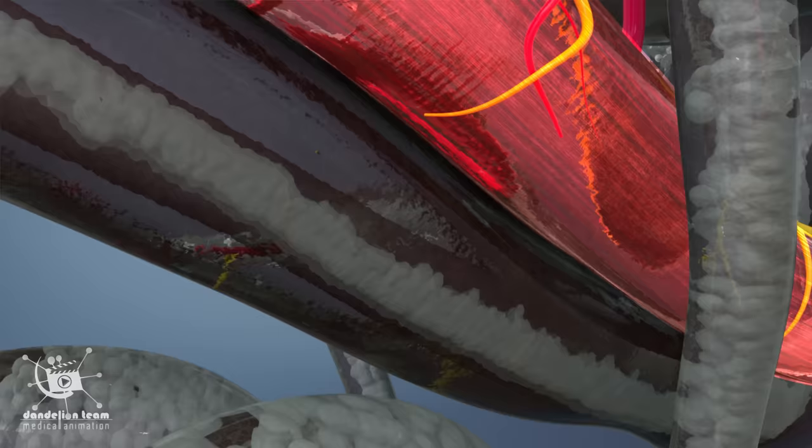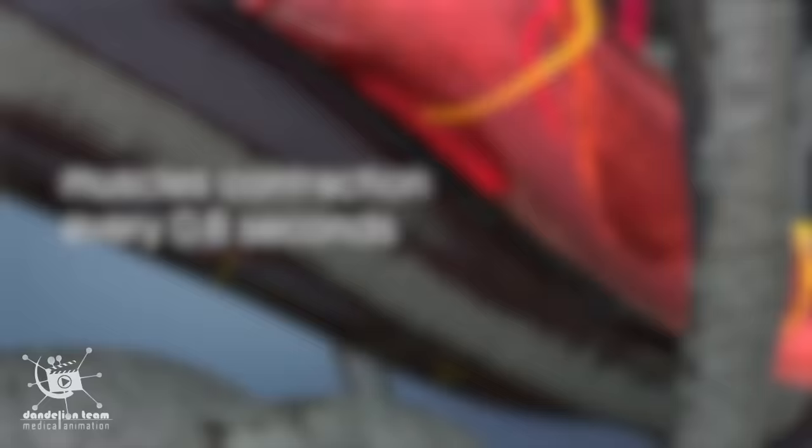Muscles at the base of the penis contract every 0.8 seconds and force the semen out of the penis in up to five spurts.